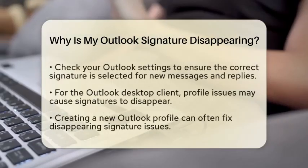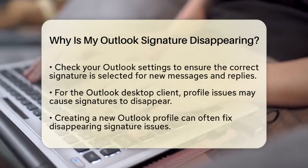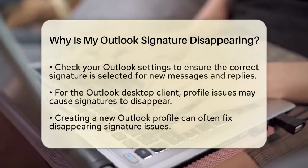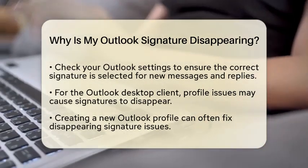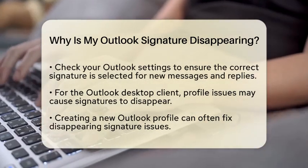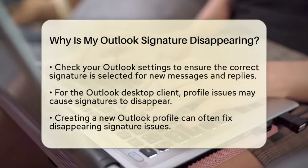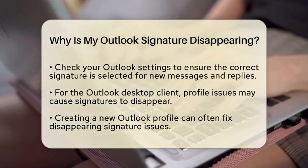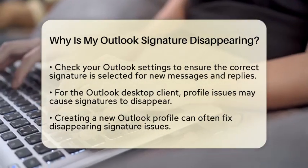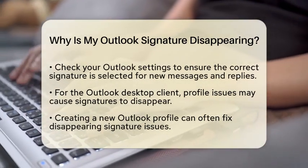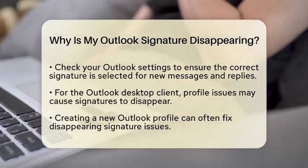Next, check your signature settings in Outlook. Sometimes your signature may be saved but not selected for new messages or replies. Go into your Outlook settings and make sure you have chosen the correct signature for both New Messages and Reply/Forwards.